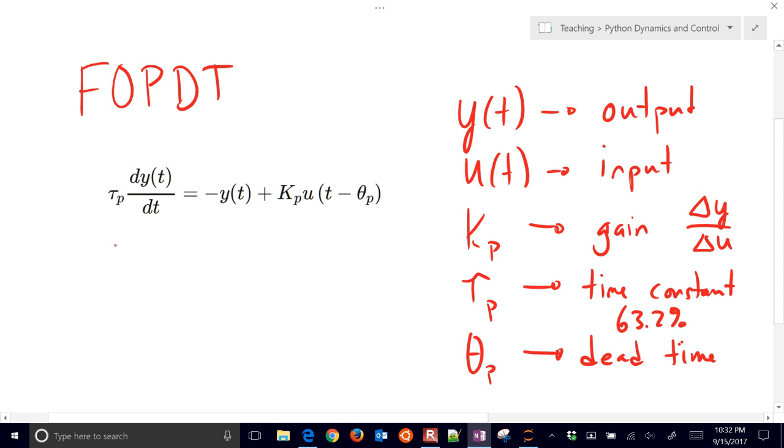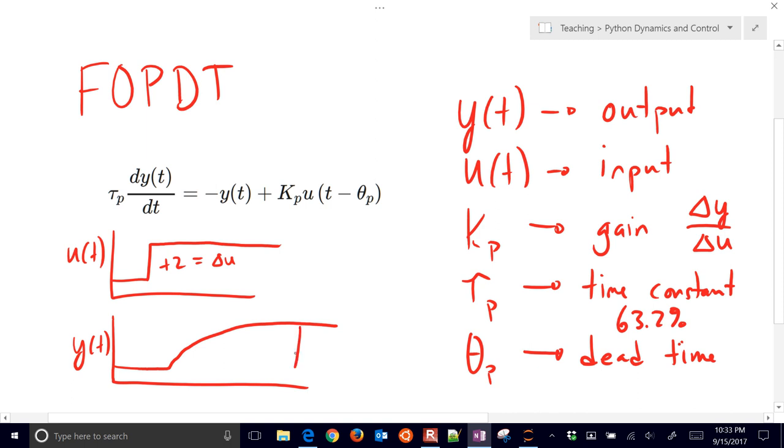So when you move the input, it's how long it takes the output to start responding. So let's go ahead and just sketch some of these. Let's say I have an input like this, then I have a step of plus 2 equals delta U, and then I have a response that looks like this on my Y of T. And let's say this changes by plus 5 equals delta Y. So I can know that my gain, Kp, is going to be equal to 5 divided by 2.